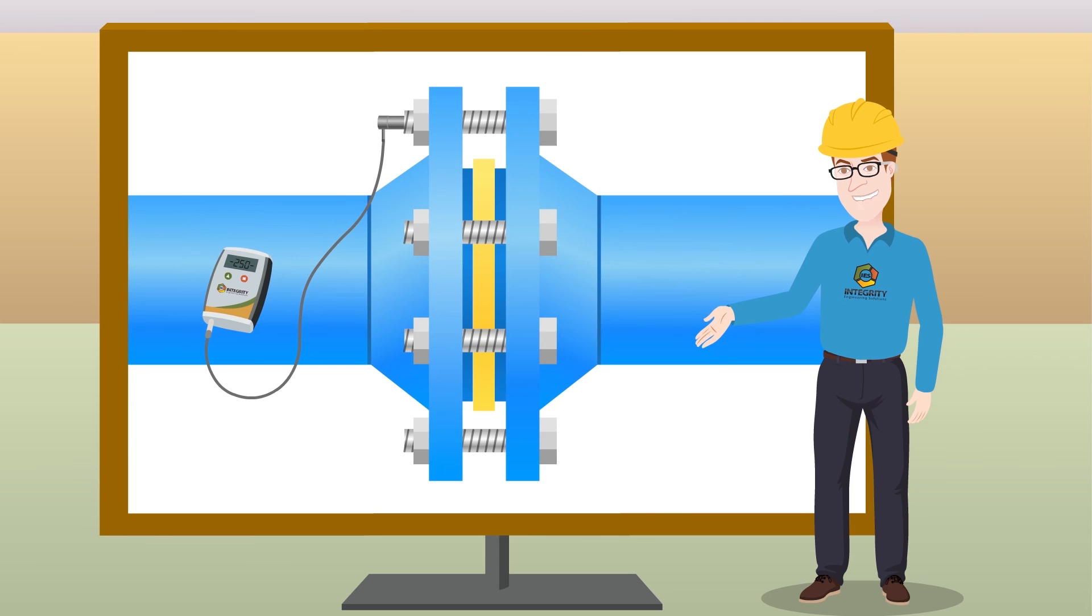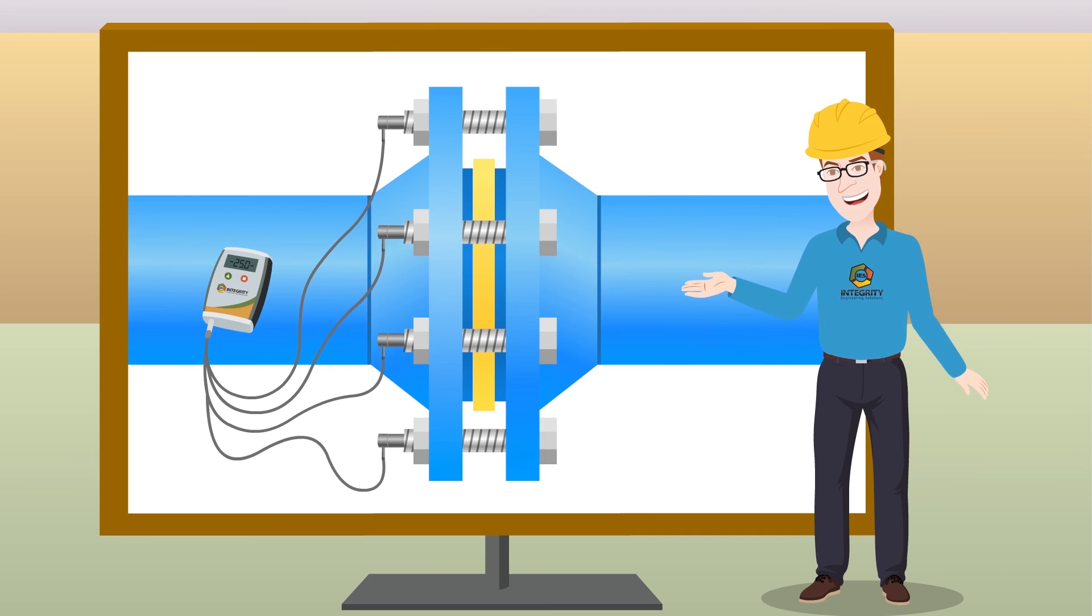RT Bolt can be used as a probe to randomly inspect joints, both during and after assembly. RT Bolt can be permanently installed or periodically installed to monitor bolt load during assembly and operation.